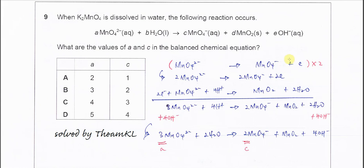Question 9. To find the coefficient of this reaction, especially A and C, you need to construct the half-equation. You have to split the overall equation into two half-equations.